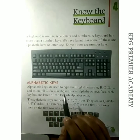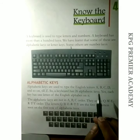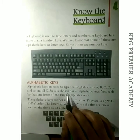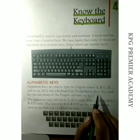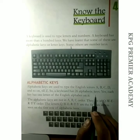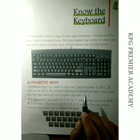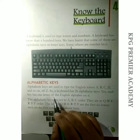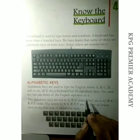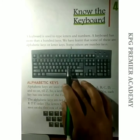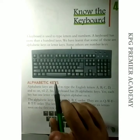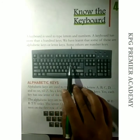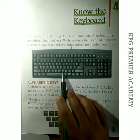Why do we use alphabetic keys? They are used to type English letters — A, B, C, D, E, F up to Z. A keyboard has 26 alphabetic keys because there are 26 alphabets. Each key has one letter of the English alphabet on it. You can count the keys Q, W, E, R, T, Y — you will have 26 alphabetic keys.